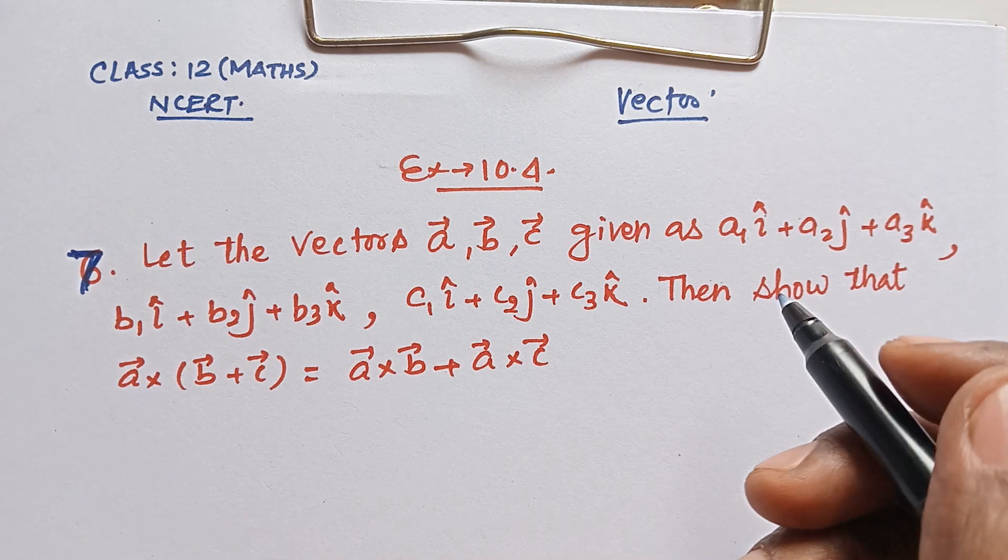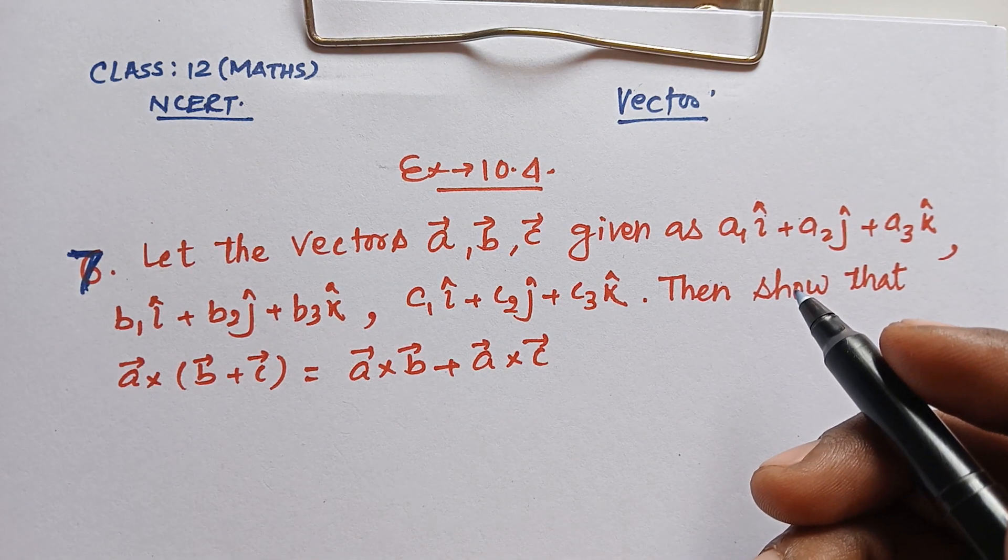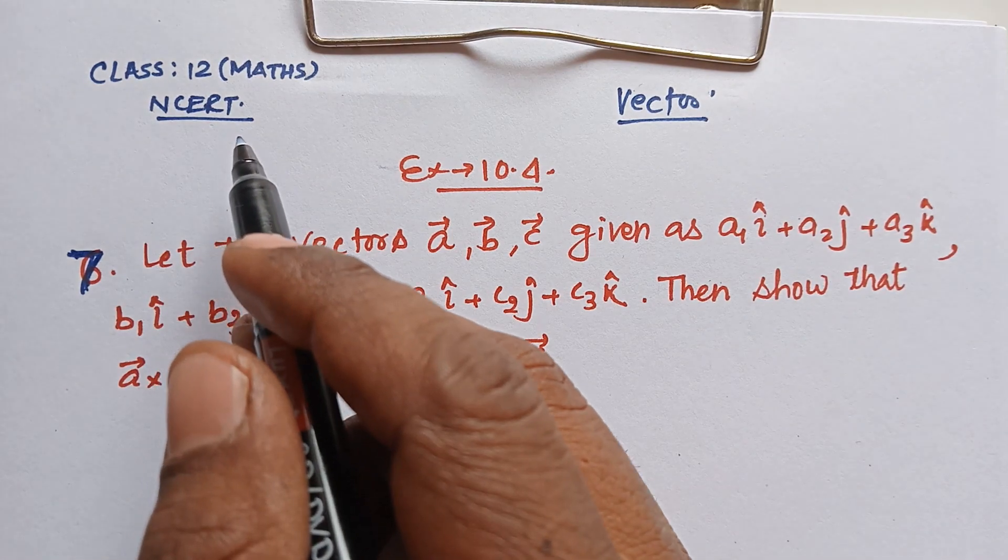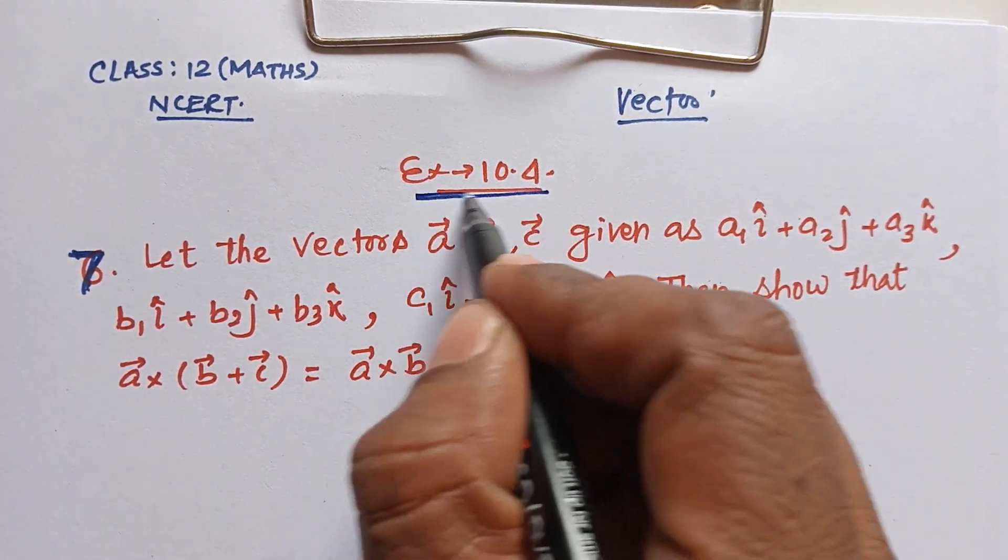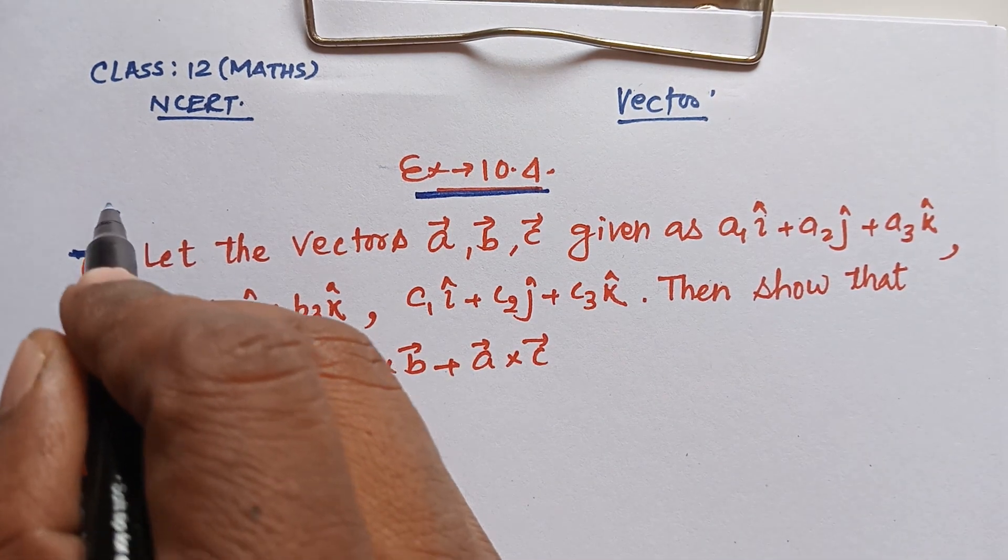Welcome to Vidya Kulam Tutorials, I am Ithlesh Bharma and today we will see the class 12th Mathematics NCRT book. Chapter is a vector. Exercise is 10.4, Question number is 7.